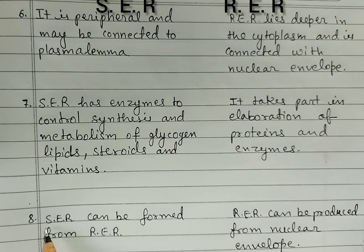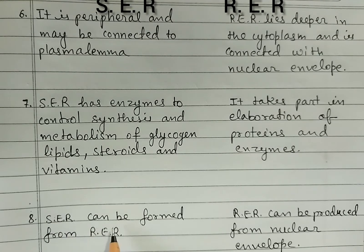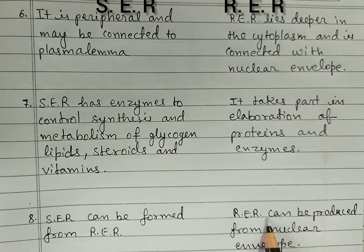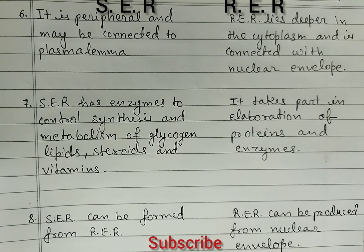Eighth difference — smooth endoplasmic reticulum can be formed from rough endoplasmic reticulum, and rough endoplasmic reticulum can be produced from the nuclear envelope.